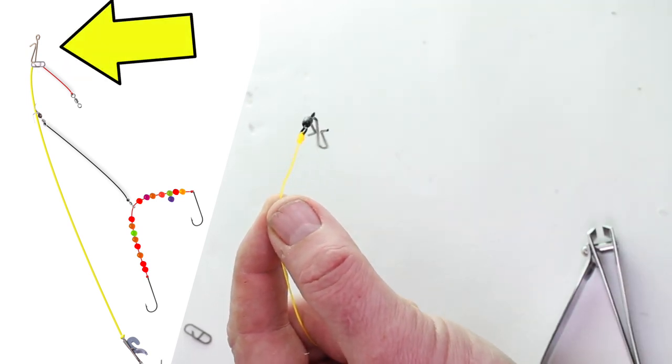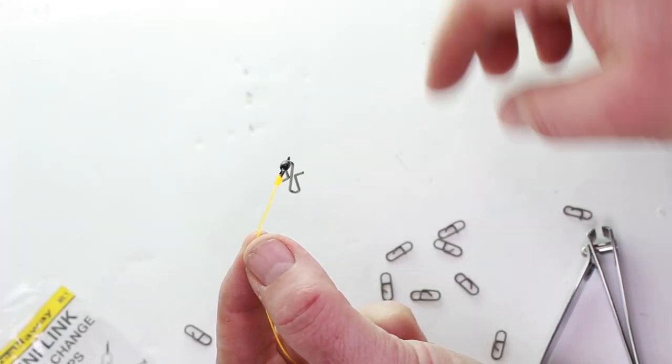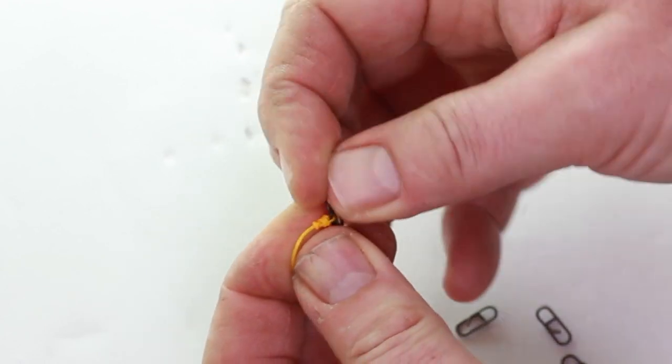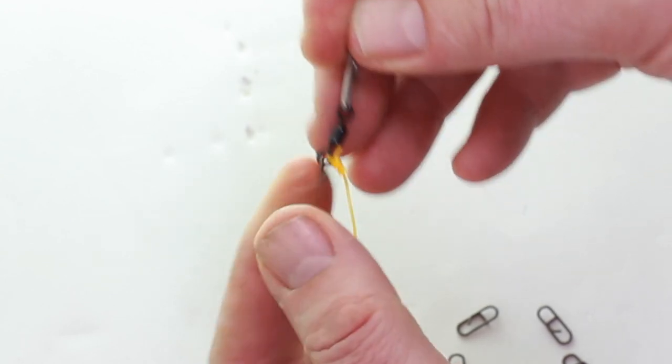Now we're going to take some of these mini links as well - these are also from Breakaway. They are essential for this rig because you're going to use some power gum with the cascade swivel. It will become clear in a minute.